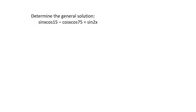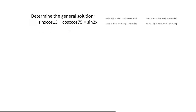This almost looks like a compound angle, but something is a bit weird. We've got sin cos and then cos cos, which doesn't match compound angle formulas. But what I noticed is that we've got 15 and 75, and those add up to 90 — so we should be thinking along the lines of co-functions.